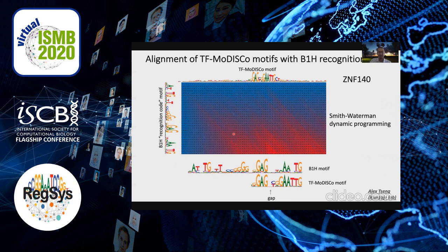We came to understand that it's actually very important to align the motif we learned to the recognition code. This is important because if you can get the alignment working, you'd actually know which part of the motif aligns to the recognition code, telling you which zinc fingers are used to bind DNA in vivo. You'd also learn the presence of gaps that are needed, which would tell you something about the flexibility of the zinc fingers in binding. We developed a tool using dynamic programming to allow gap alignments of our zinc finger motifs to the recognition code.